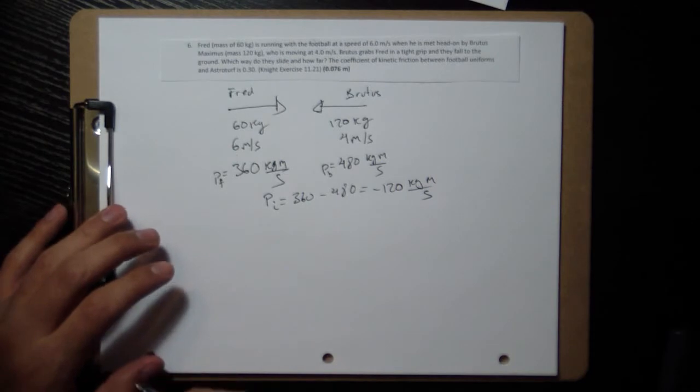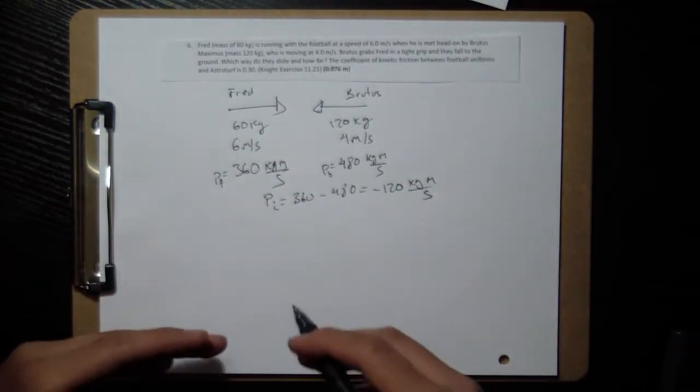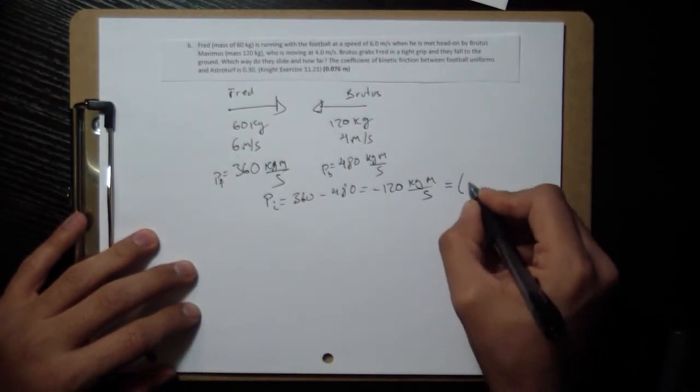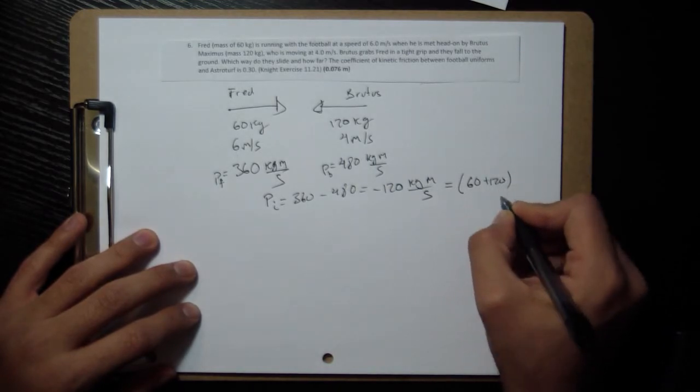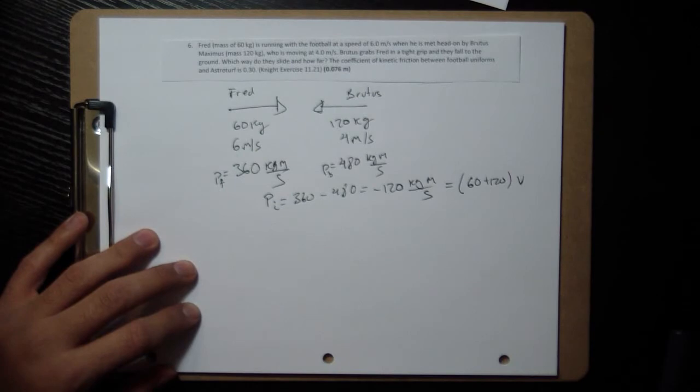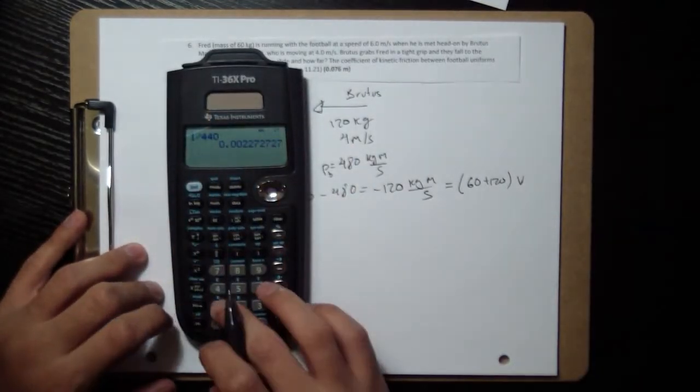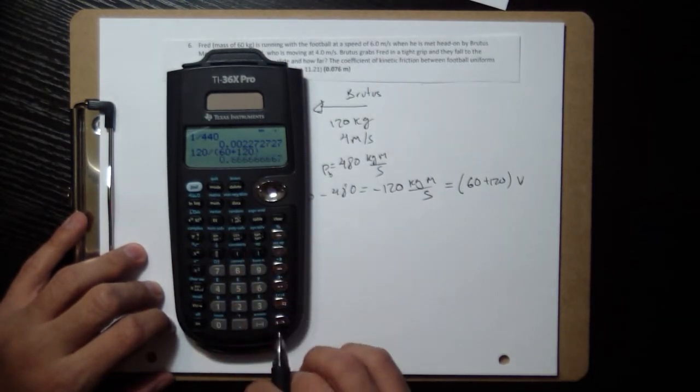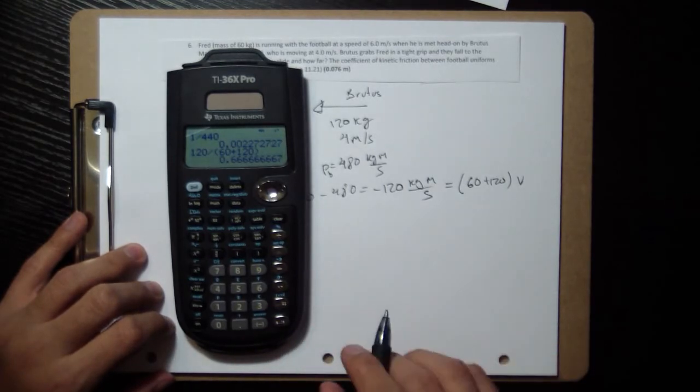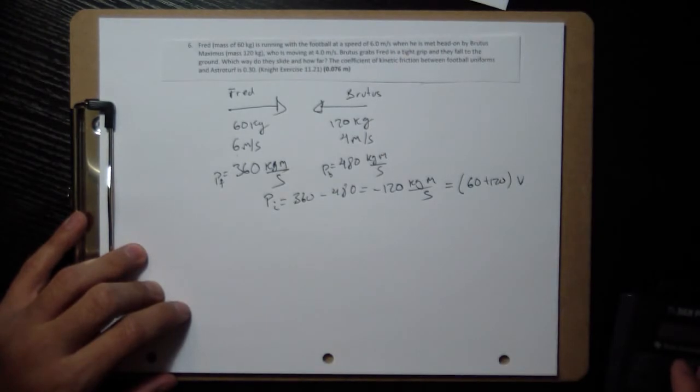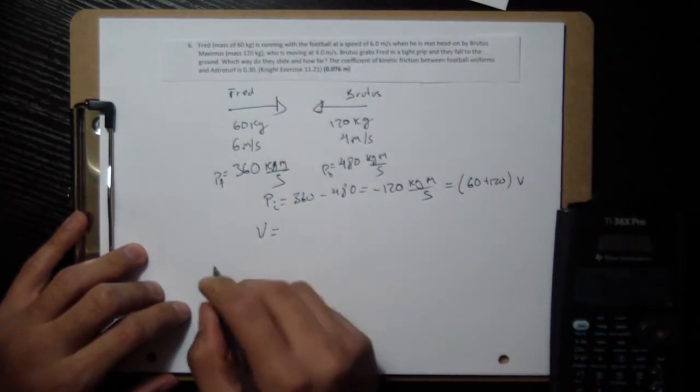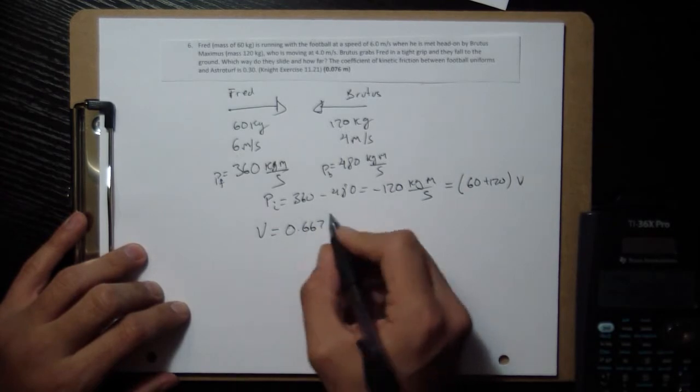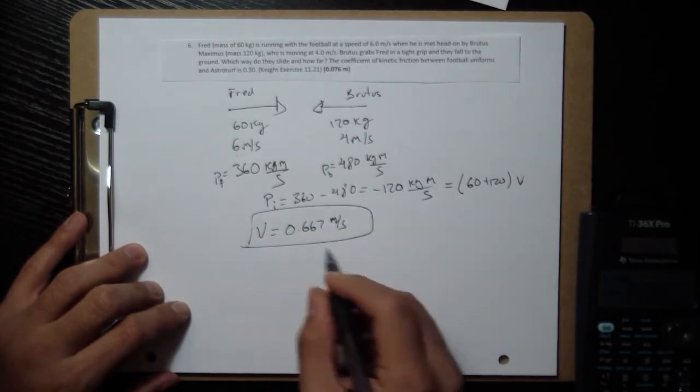To find out the speed afterward, we can say okay, that's the momentum before. Afterward they're moving together, so afterward they're going to have this momentum but it's going to be both their masses together. So it's going to be 60 plus 120 together times whatever speed they're going at. So we divide 120 by that sum: negative 120 over 60 plus 120. And I get 0.66 etc. So that is the speed at which they're going. I didn't put in the negative so that should be a negative. They're going to the left. 0.667 meters per second. That's how fast they're going to the left.